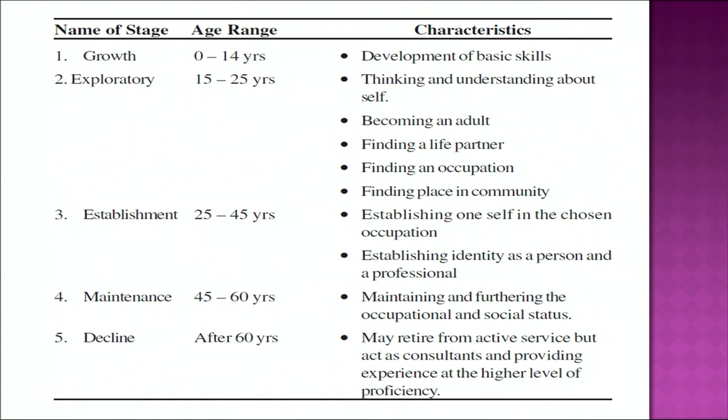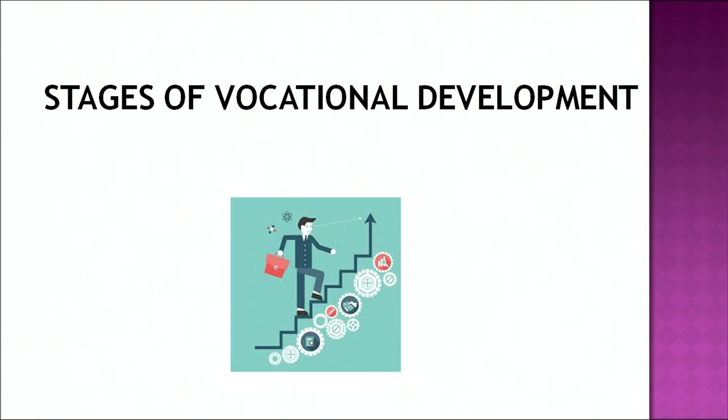The last stage is the decline stage. People usually get retired at the age of 58 or 60 years. At this stage, a person is not able to keep up well — their health declines and they are not able to take up all family responsibilities. So people take retirement. But nowadays, a trend has been seen where many people are working after retirement also. Once we understand the various life stages and how they relate to career development, we must know the different stages of vocational development.